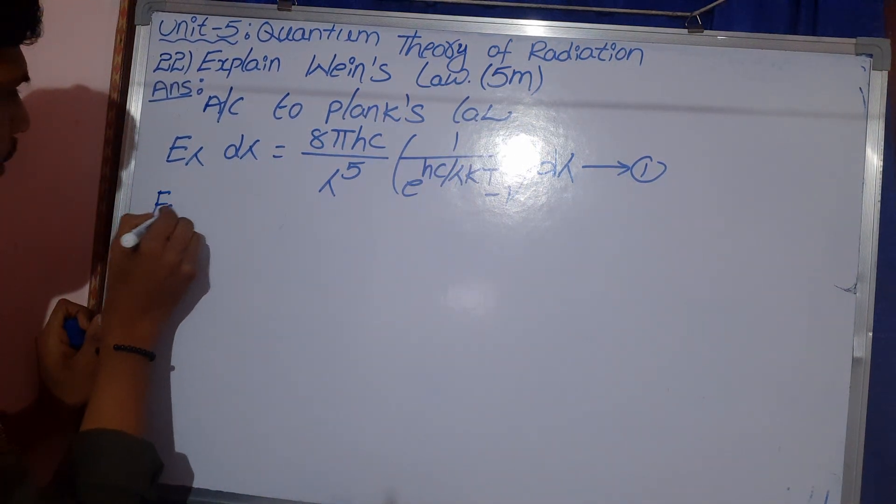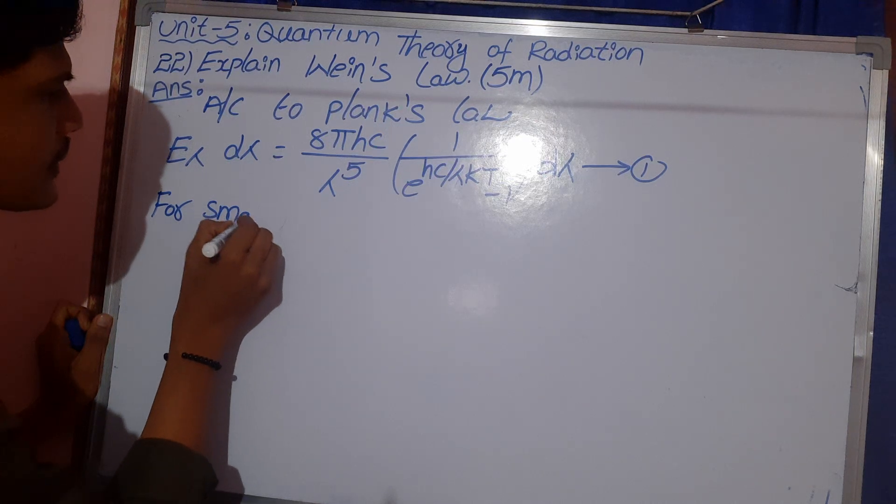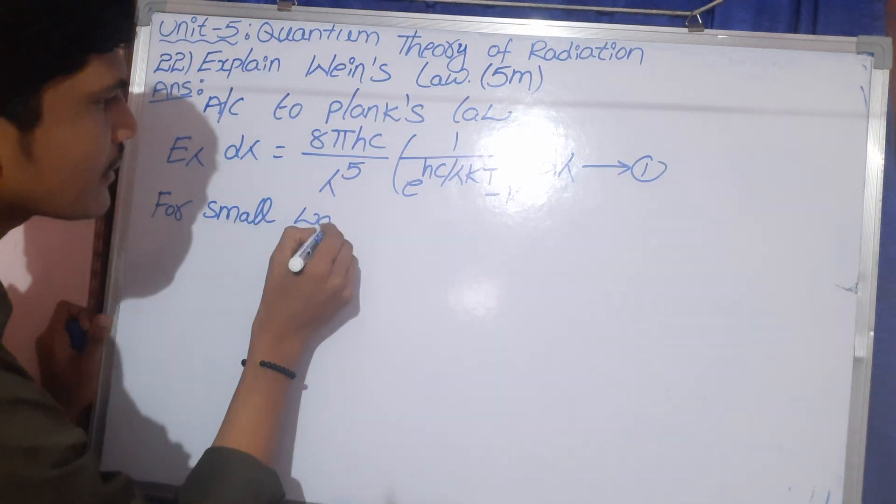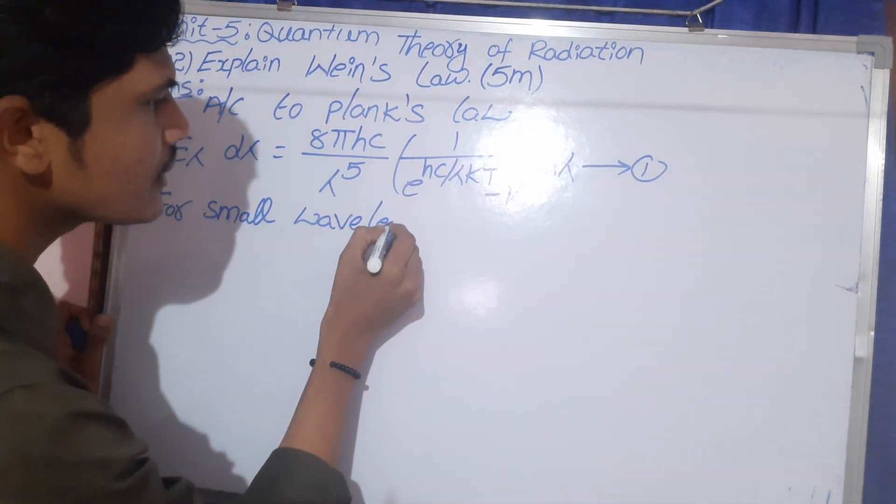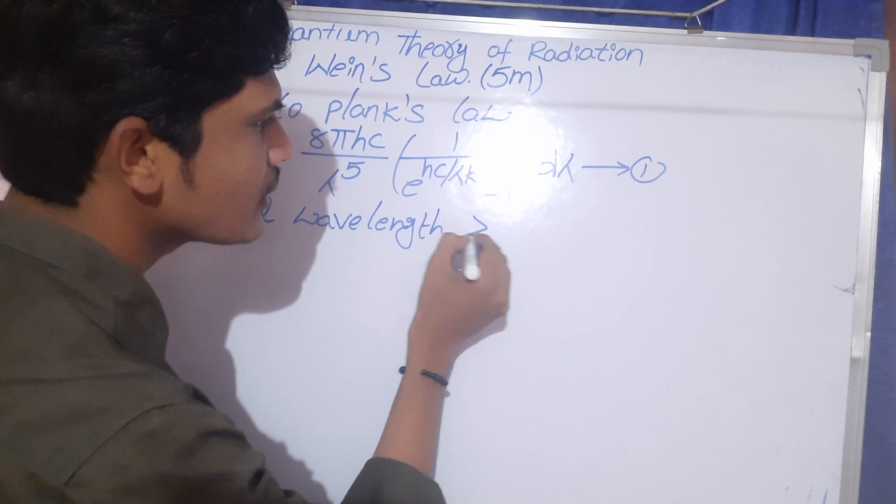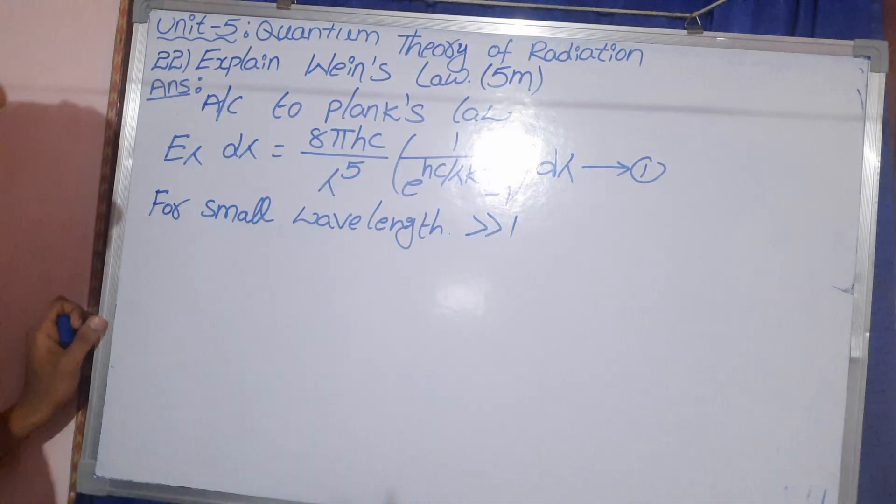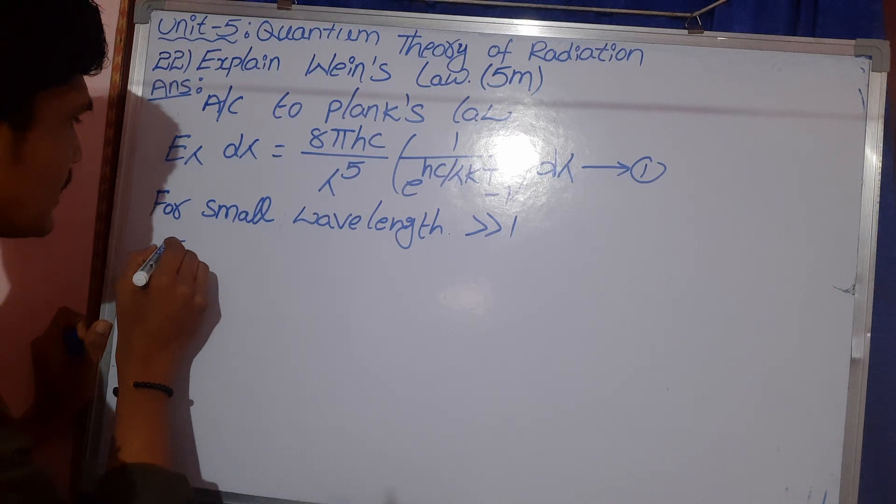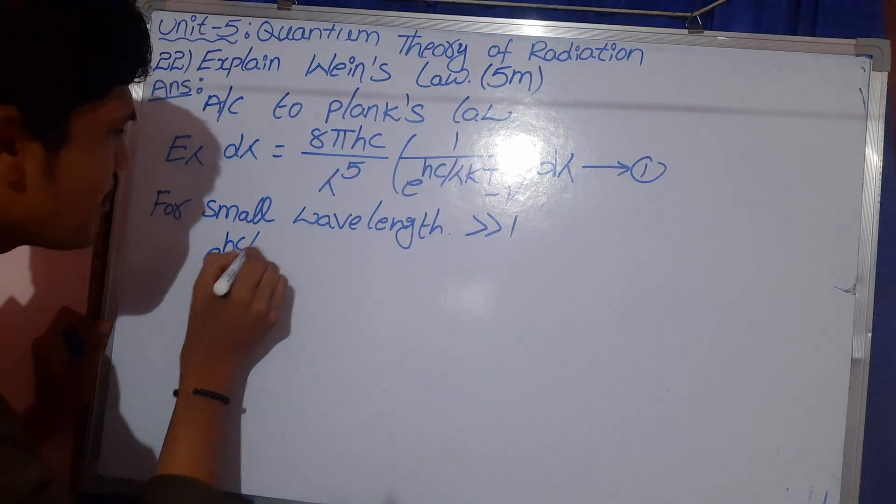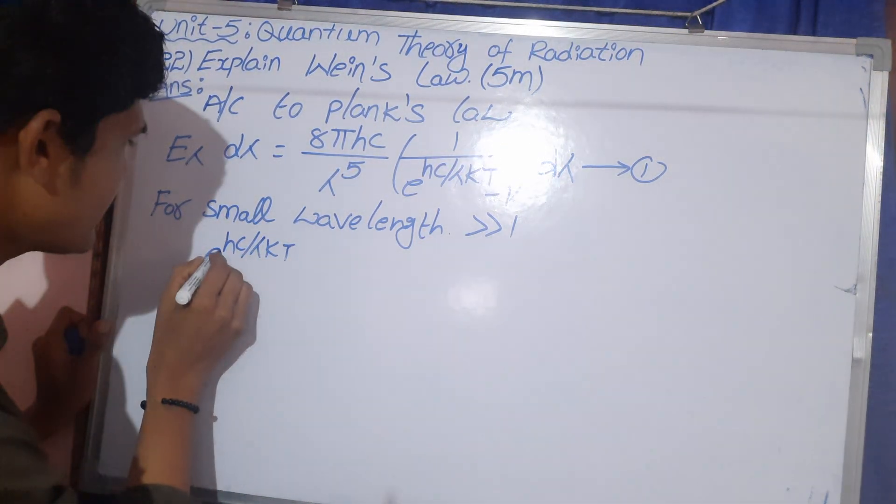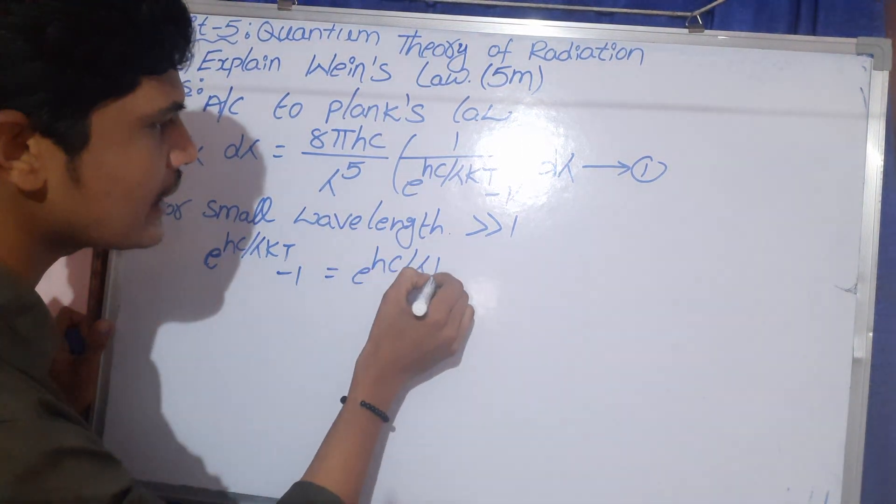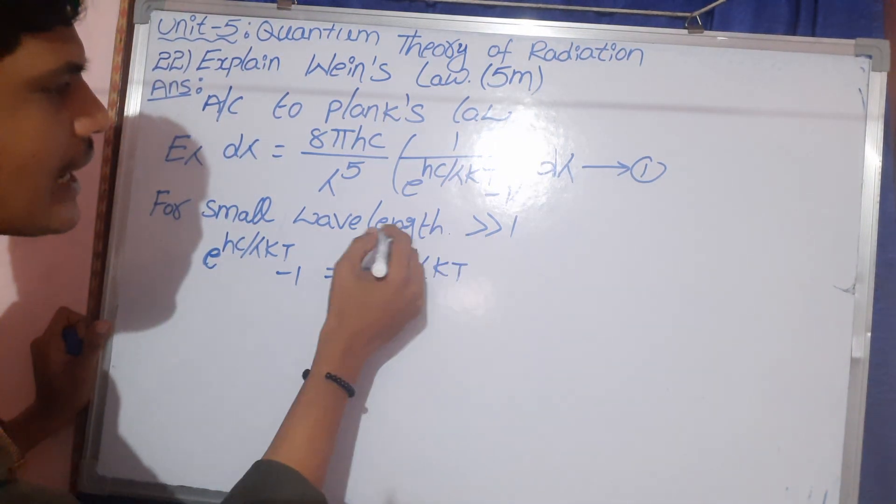Next for small wavelength greater than 1, that means E power Hc by lambda Kt minus 1 equals E power Hc by lambda Kt. So, lambda value is low and low.